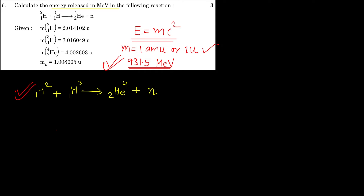We will calculate the mass defect for this reaction and simply multiply it by 931.5. The mass of each species in this reaction is given in the question: mass of deuterium, mass of tritium, mass of helium formed, and mass of the neutron are all provided.